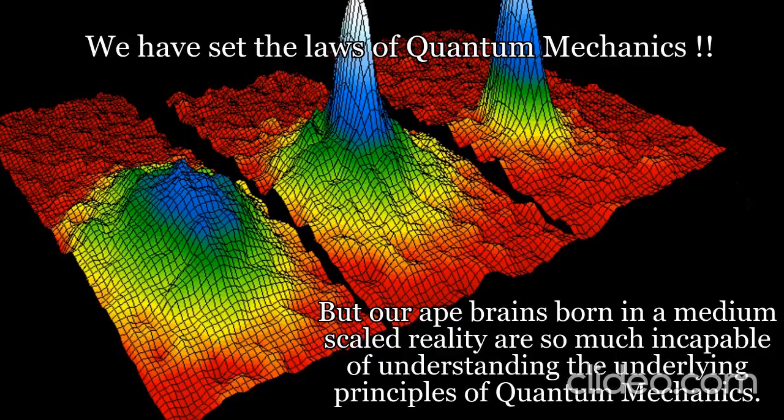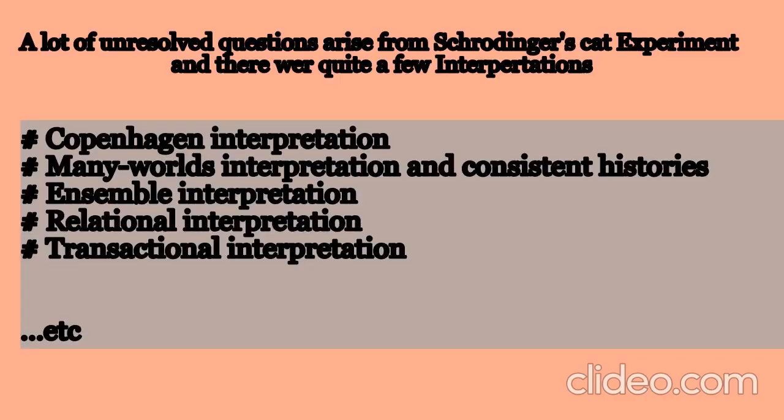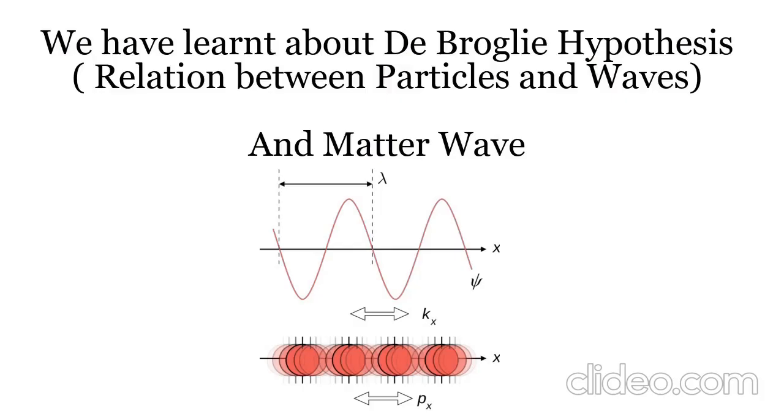This difficult nature of quantum mechanics is hard to grasp. Many interpretations like the Copenhagen interpretation were developed from this experiment. The dual nature of wave and particle and the relation between them has been discussed over here.